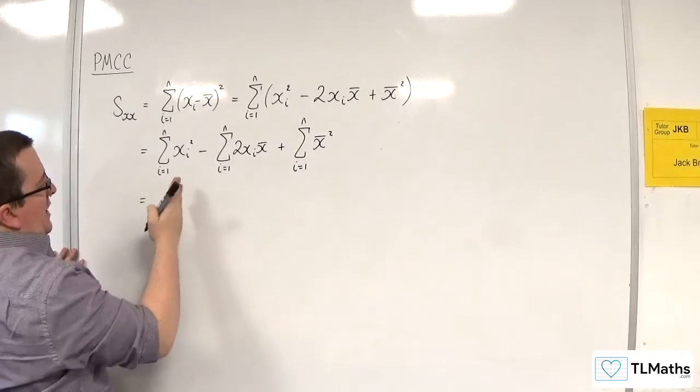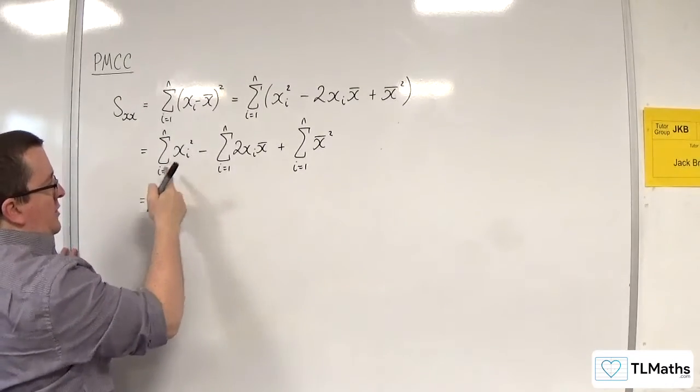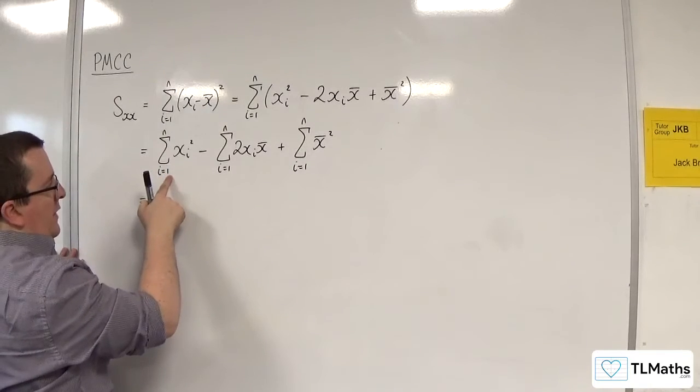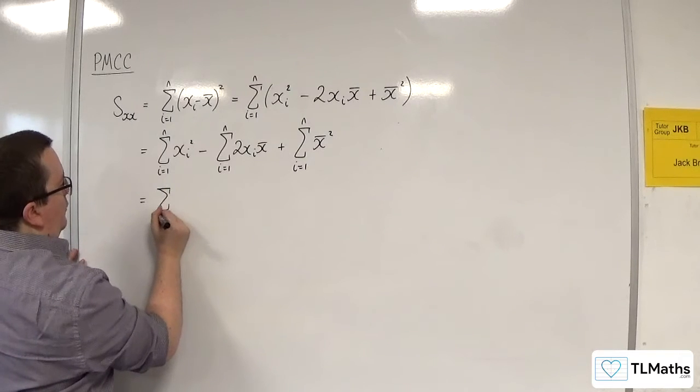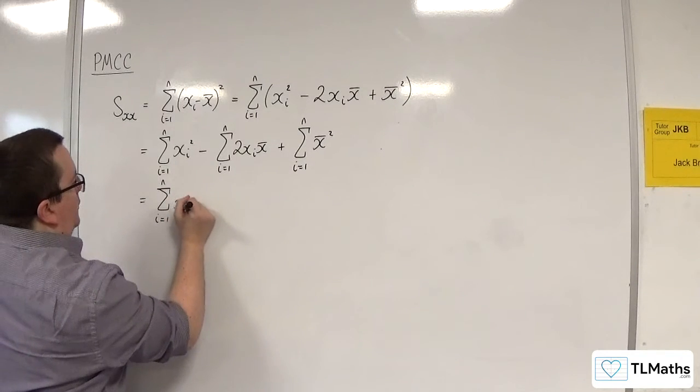Because the XI here is to do with the I that's there, I can't move that. So that's going to have to stay as it is: the sum from i is 1 to n of XI squared.